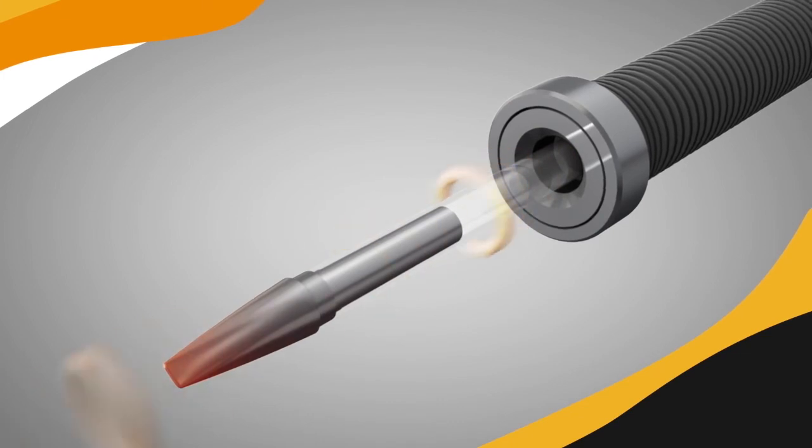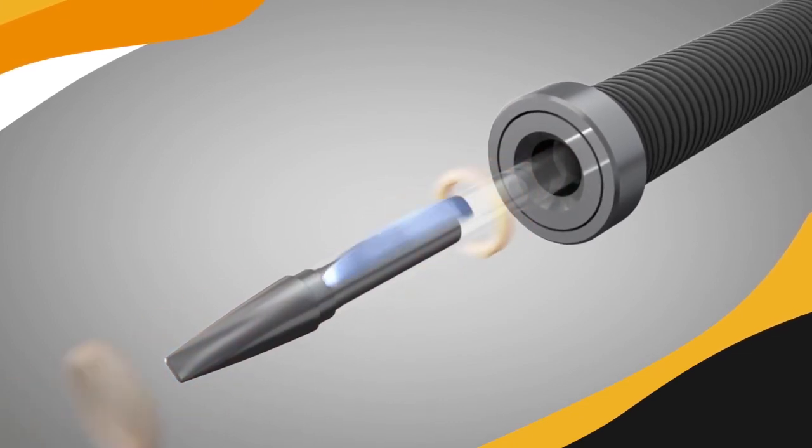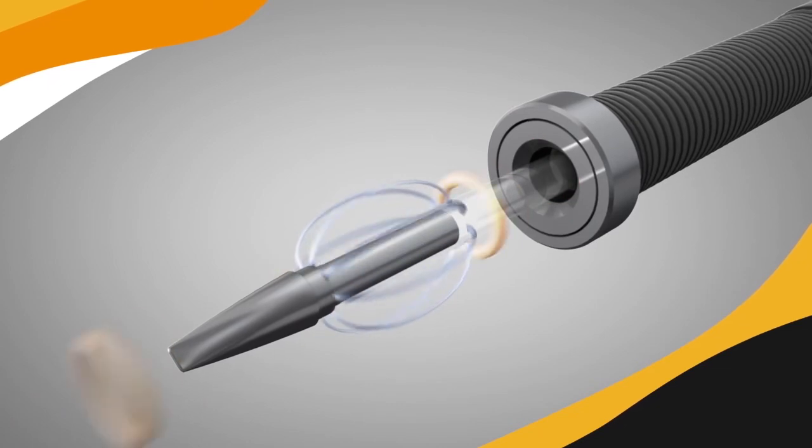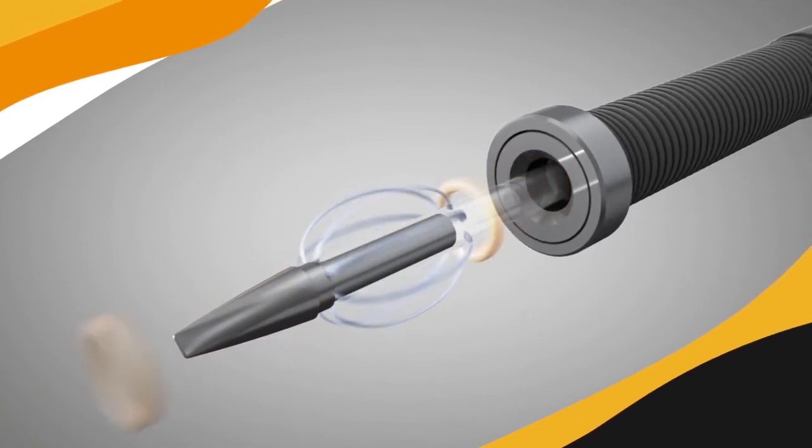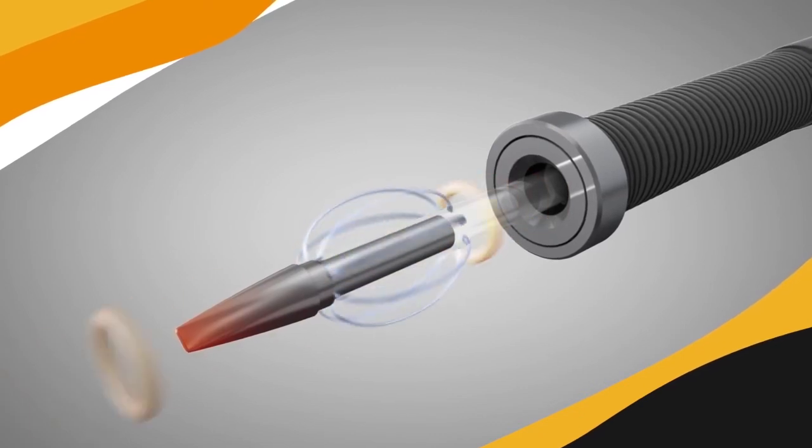As the tip cools slightly, the alloy passes back through the Curie point temperature and its magnetic properties are restored. The skin effect immediately returns and heating begins again, repeating the cycle.